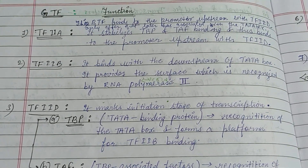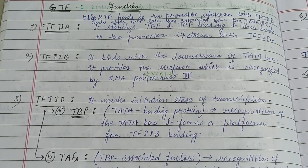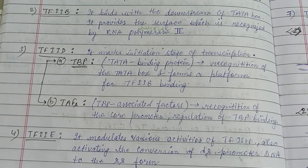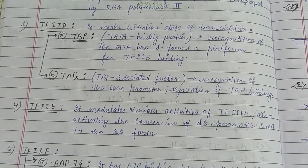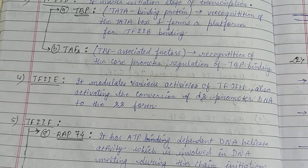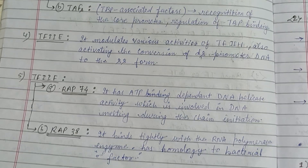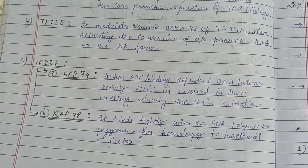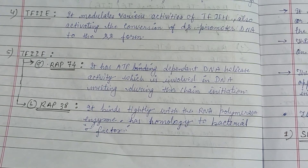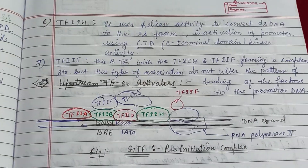General transcription factors are categorized into the following types: transcription factor IIA (TFIIA), TFIIB, TFIID — which is subdivided into the TATA-binding protein and TATA-binding protein associated factors — TFIIE, TFIIF — subdivided into RAP74 and RAP38 — and TFIIH and TFIIJ.